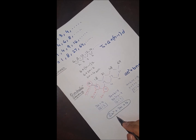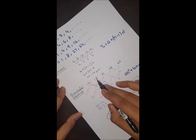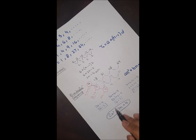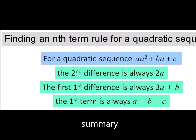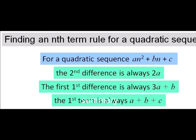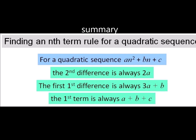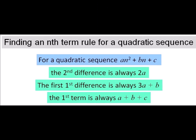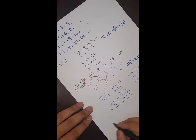You can verify this: substituting n = 1 gives 9, n = 2 gives 18, and n = 3 gives 31, which matches our original sequence. The last type is the geometric sequence.